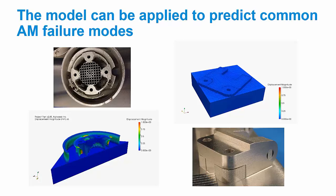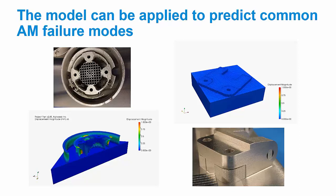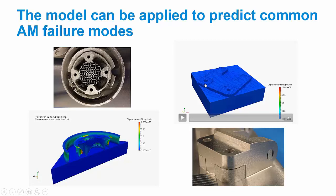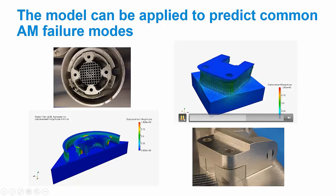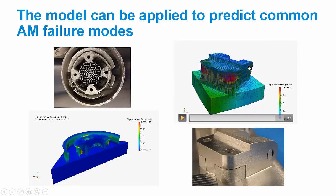Another common failure mode shown here is a part delaminating from the support structure. The user can simulate the full part and support structures together, and prescribe a failure stress at the interface between the two. If that stress is exceeded, the elements will fail. You can see that as the stress got exceeded, elements in that zone failed — this distortion is magnified by about 10 times, which is why it looks so dramatic. In that area, you may want to strengthen the support structure to anchor the part down.